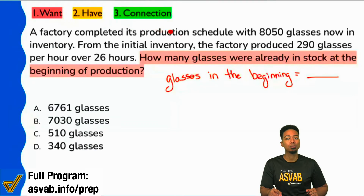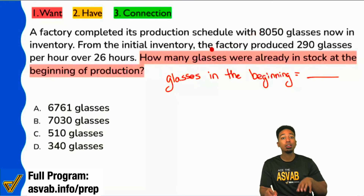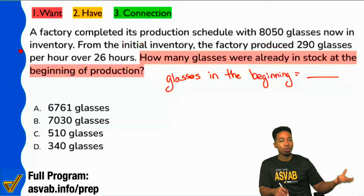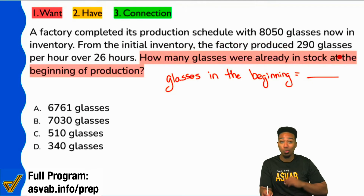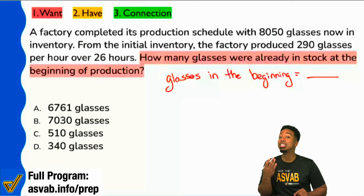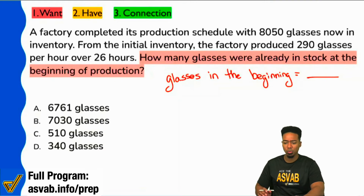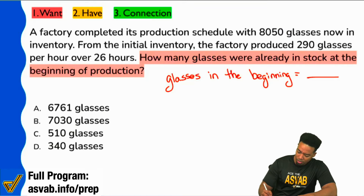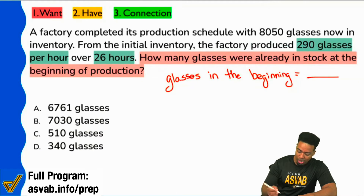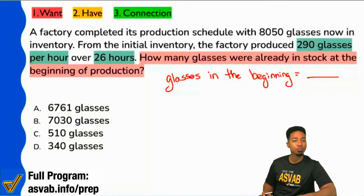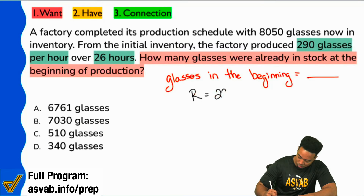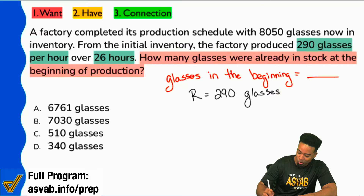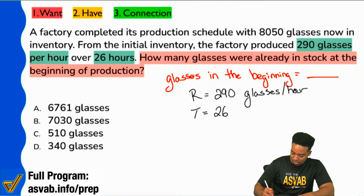So again — a factory completed its production schedule with this many glasses. From the initial inventory, the factory produced this many per hour over this time. We have a rate, we have a time, we have the final amount, and we're looking for the beginning amount. Here's how we can still use distance equals rate times time. 290 glasses per hour and 26 hours — those are both a rate and a time respectively.